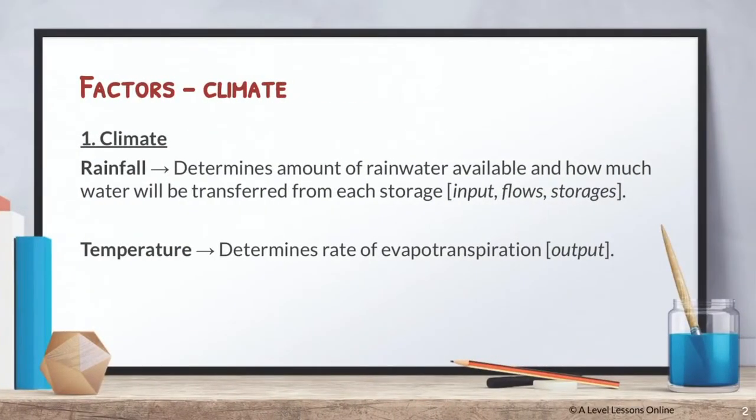The first factor we have is climate. As we all know, climate tends to be the biggest factor for almost everything — be it karst, aeolian, the hydrological cycle, ITCZ, atmospheric circulations. The reason is that climate is a global factor; it affects everyone on an entirely global scale. It consists of rainfall and temperature, which are huge macro factors.